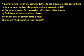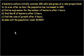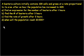A bacteria culture initially contains 100 cells and grows at a rate proportional to its size. After an hour, the population has increased to 420. The first part says: find an expression for the number of bacteria after t hours. In general, anything dealing with exponential growth, exponential decay, or continuously compounding growth — the amount as a function of time follows a specific equation. I'll write bacteria as a function of time, B of t.